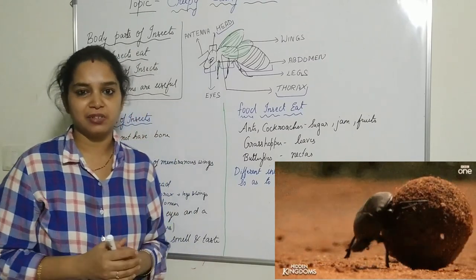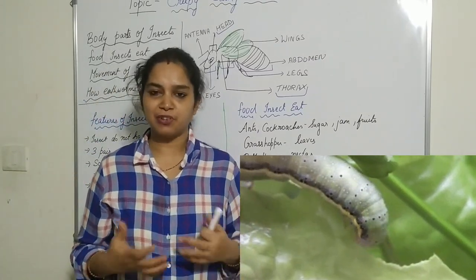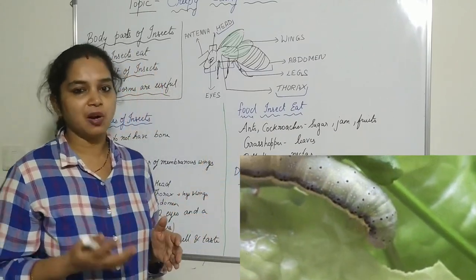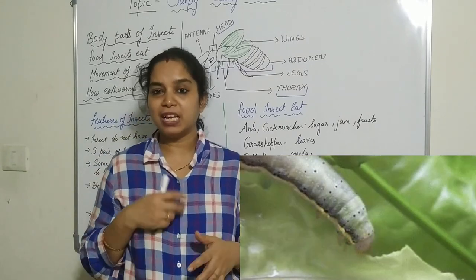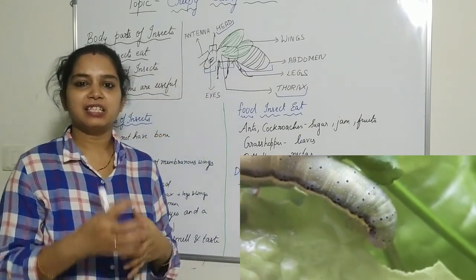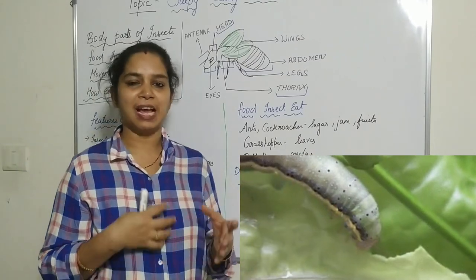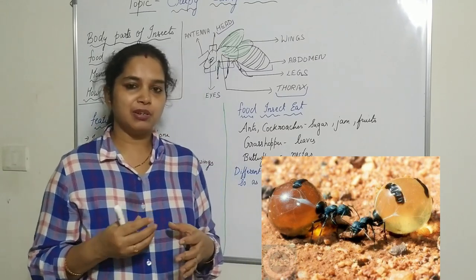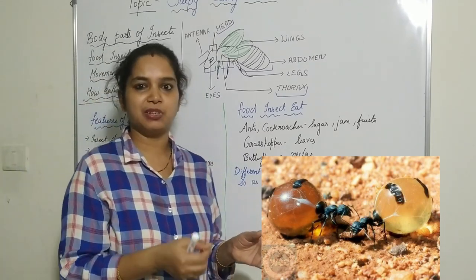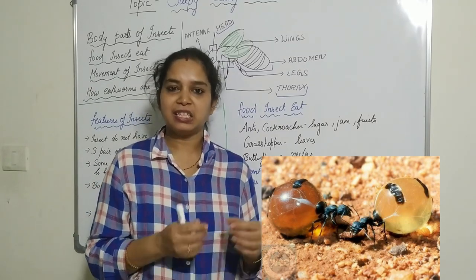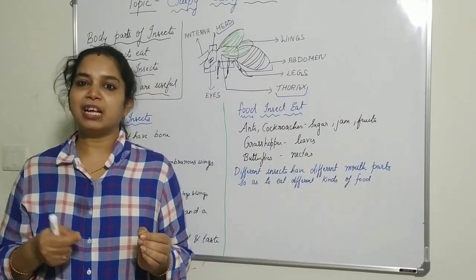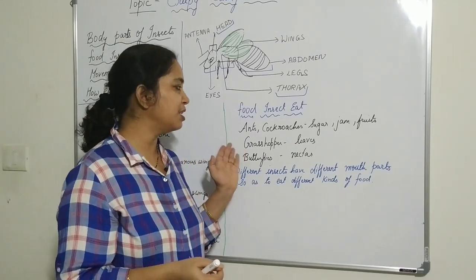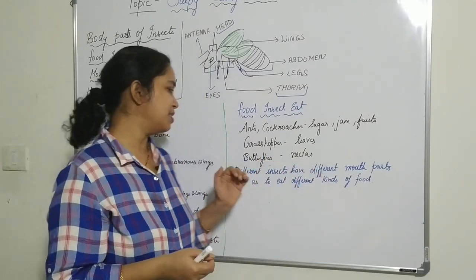Now, what food do insects eat? Every living organism eats food, and insects also feed on something to survive. Ants and cockroaches survive on sweet things — they take sugar, jam, and all sugary substances including fruits. If you keep some sugar outside, after some time ants will gather and take it one by one to their hiding place to be used later.